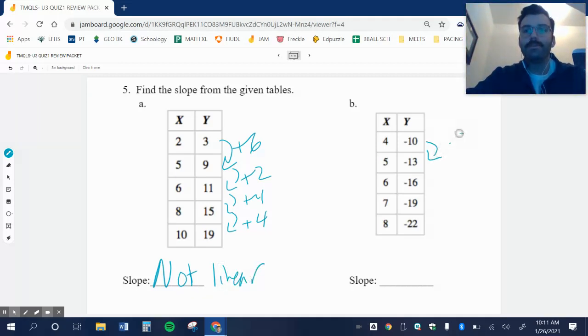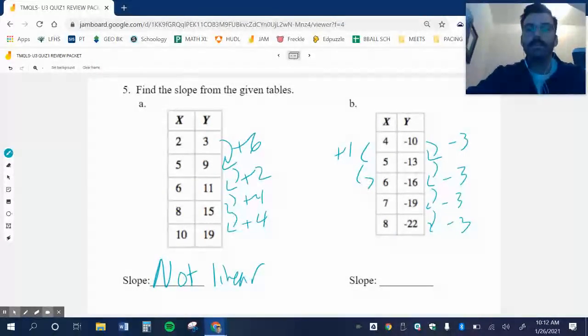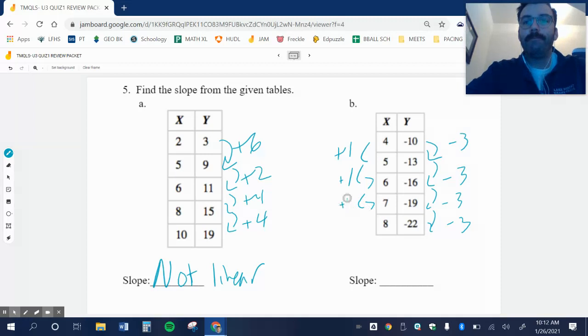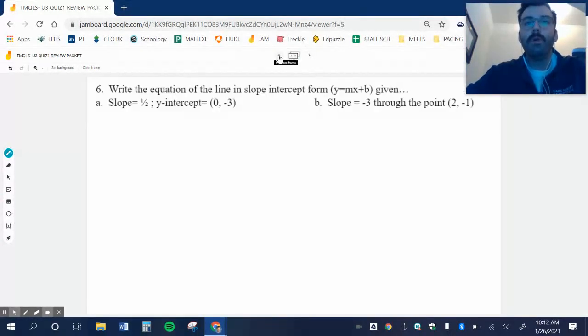I'm subtracting 3. I'm subtracting 3. I'm subtracting 3. So this one is shaping up to be linear. And I'm going up 1 every single time here. I'm adding 1 every single time. So my slope is negative 3 over 1, which is just negative 3. We'll pick up with number 6 on the next video.